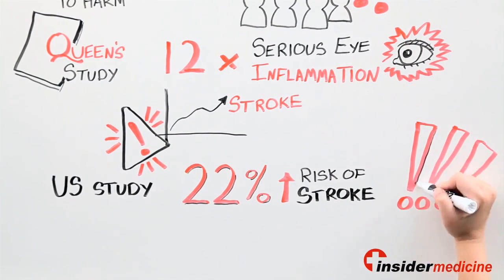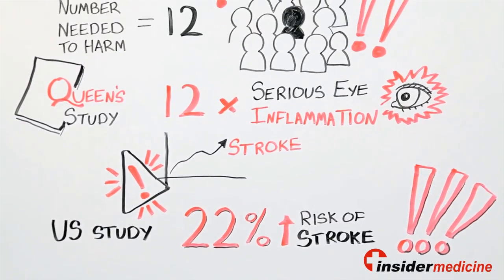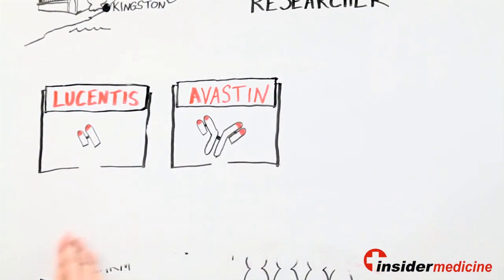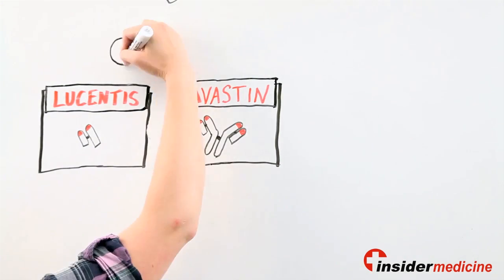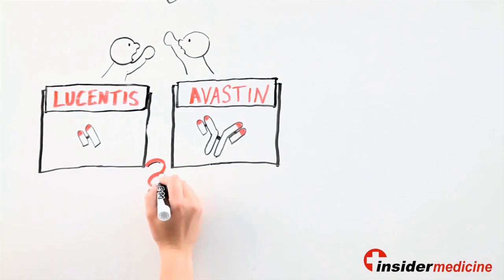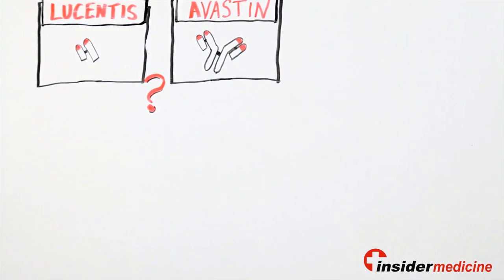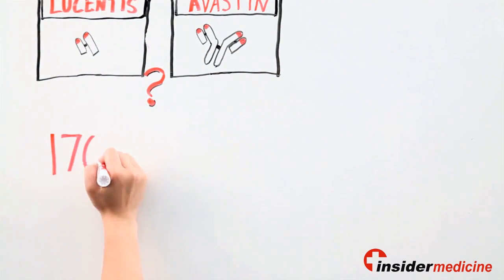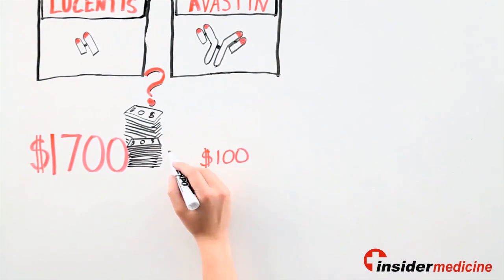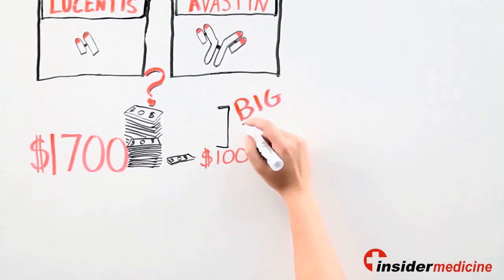Despite the safety concerns raised by these studies, there is an ongoing policy debate over whether to use Lucentis over Avastin. Some health policy makers want us to stop using Lucentis altogether. Why? What it really comes down to is the huge difference in drug cost. Lucentis costs $1,700 per injection, and Avastin retails for about $100. And that definitely is a big difference.